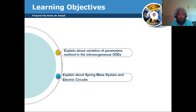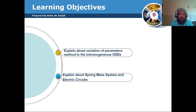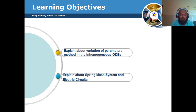Today we are going to apply another method — the variation of parameter method — to find the solution of non-homogeneous ODE. After that, the second part of this explanation is about the spring-mass system and electric circuit. I hope you are going to enjoy.